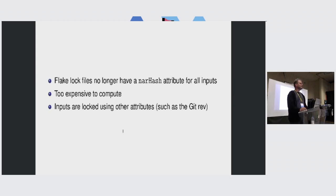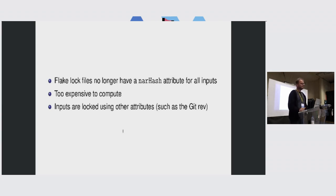In principle, you could have a clean git tree and then start modifying after Nix has determined that it's clean — but that falls under the 'don't do that' category. At least the narhash would still reflect the dirty state in that case.